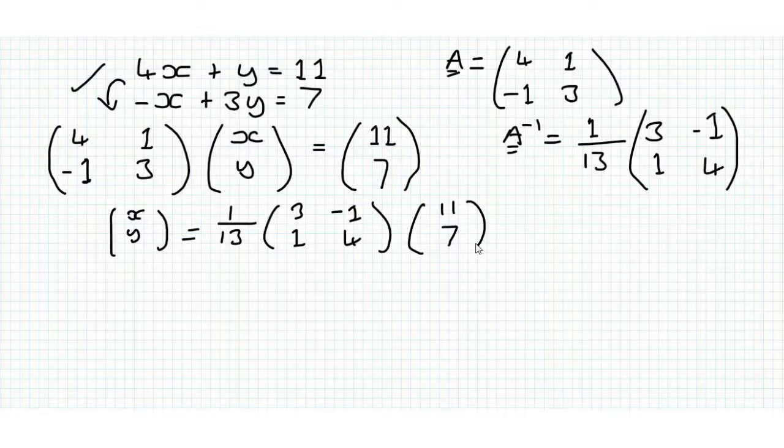Ok, now we're going to work through this. This constant we're just going to leave for now. 1 over 13. Because this is a 2 by 2 matrix, this is a 2 by 1, we're going to get a 2 by 1 as our answer.